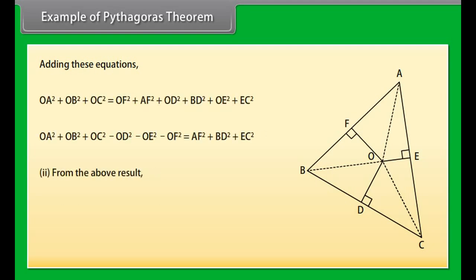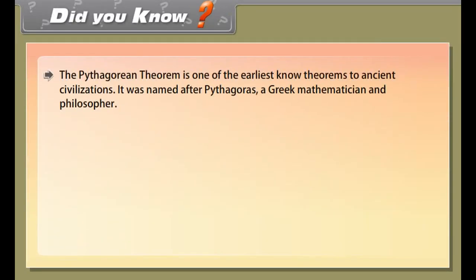Part 2: From the above result, AF² plus BD² plus EC² equals OA² minus OE² plus OC² minus OD² plus OB² minus OF², which gives AF² plus BD² plus EC² equals AE² plus CD² plus BF².